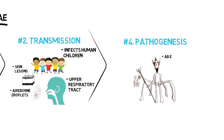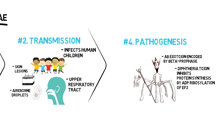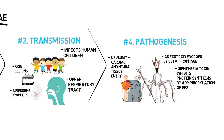Pathogenesis. Exotoxin production is essential for pathogenesis. An AB exotoxin encoded by a bacteriophage inhibits protein synthesis by ADP ribosylation of elongation factor 2, which leads to cell death. Subunit B helps bind to cardiac and neural tissue for cell entry. Upon entry, subunit A integrates into the bacterial chromosome and the toxin is synthesized. Corynebacterium diphtheriae cells not lysogenized by this bacteriophage do not produce exotoxin and are non-pathogenic.